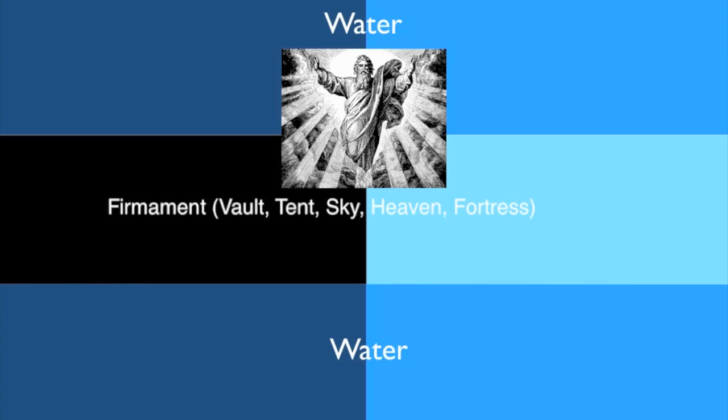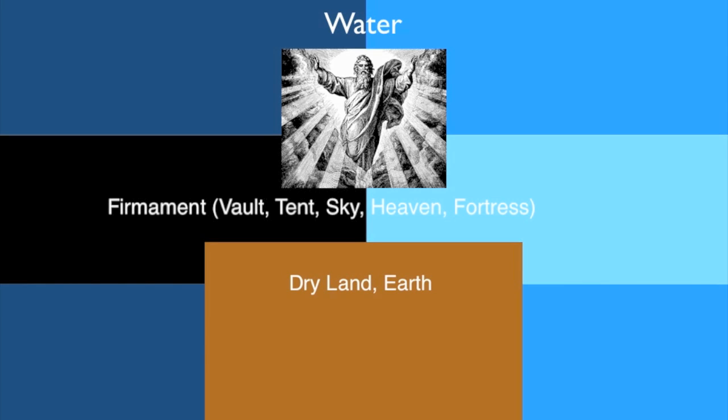Then God said, let the waters under the heavens be gathered together into one place, and let the dry land appear. And it was so. And God called the dry land earth, and the gathering together of the waters he called seas. And God saw that it was good.